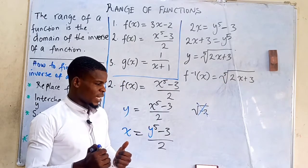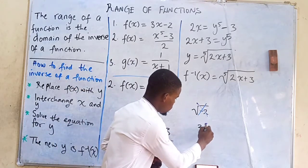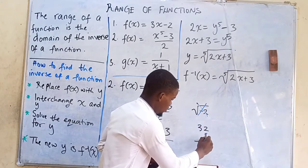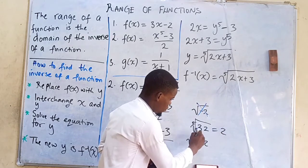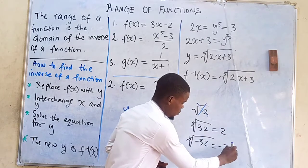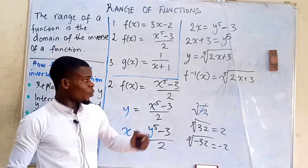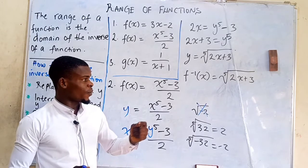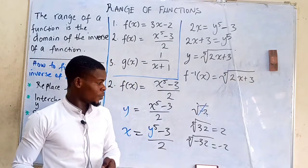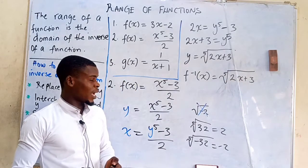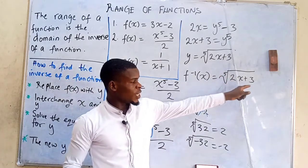The index here is 5, which is an odd index. For example, the fifth root of 32 is 2, and the fifth root of -32 is -2. So when we have a fifth root or any odd root, the input can be negative, positive, or zero. But with an even root like a fourth root or square root, the input must not be negative.